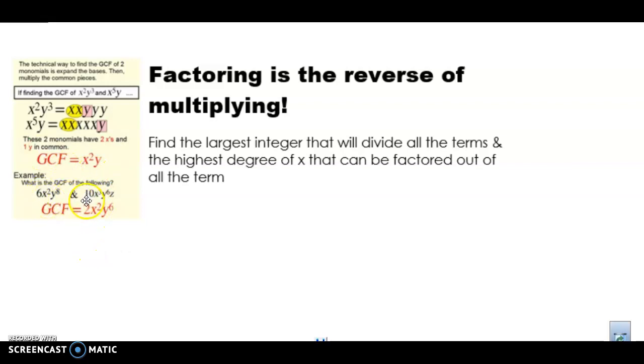If I have six and ten, the greatest common factor of six and ten - I have one and six, and two and three. I have one and ten, and two and five. So the greatest common factor of each of these is two. And I have two x's and I have three x's, so I know I can use x squared. And I have eight y's here and six y's here, so six y's. There's no z's in this one, so they don't share a common factor. And so that's why the greatest common factor of these two are two x squared y to the sixth power.